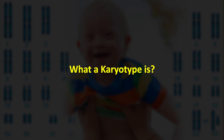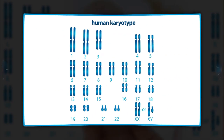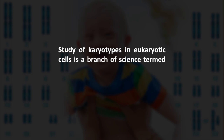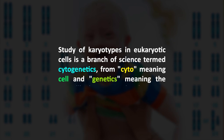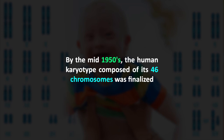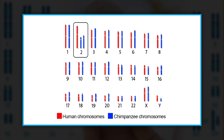The term karyotype refers to the chromosomal pattern inside the nucleus of an eukaryotic animal cell, as well as the set of chromosomes in a species or individual organism. The study of karyotypes in eukaryotic cells is termed cytogenetics — from 'cyto' meaning cell and 'genetics' meaning the cell's chromosomal makeup. The human karyotype was first discovered early in the 20th century, and by the mid-1950s the human karyotype of 46 chromosomes was finalized. Chimpanzees, the closest relatives to humans, have 48 chromosomes.